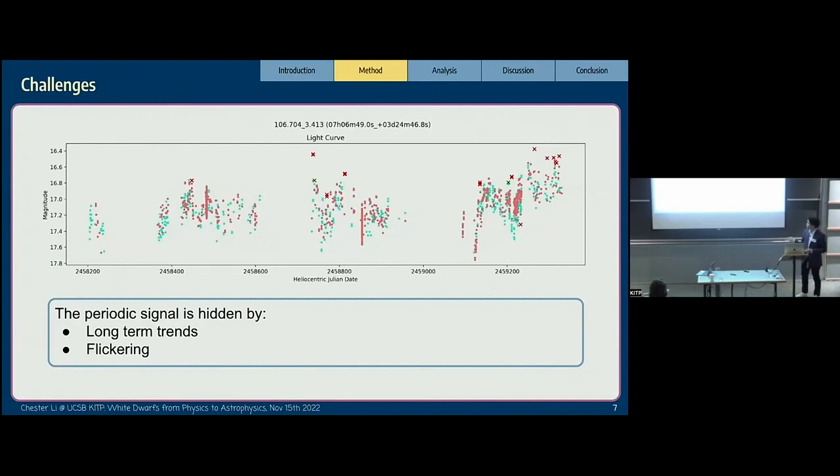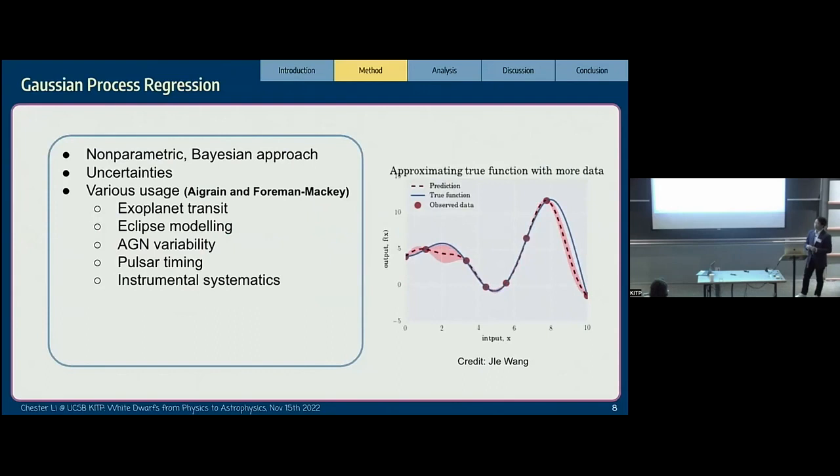We found a solution, which is called Gaussian process regression. It is a nonparametric Bayesian approach to making regression in the area of machine learning. It has quite a lot of benefits. One is it's very good for modeling small data sets. It's also pretty good for assigning probability uncertainty measurements to predictions. Recently, Gaussian process regression has emerged as a pretty effective tool for modeling data in time domain astronomy, including exoplanet transits, eclipse modeling, AGN variability, pulsar timing, and instrumental systematics.